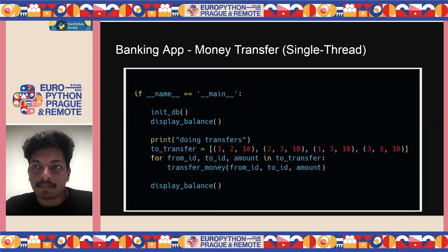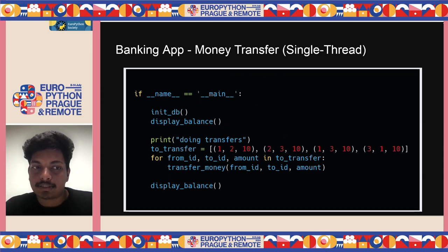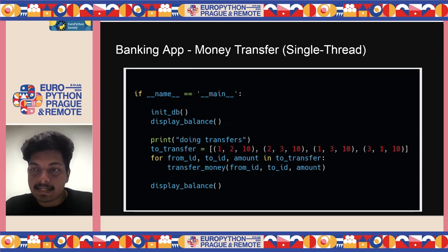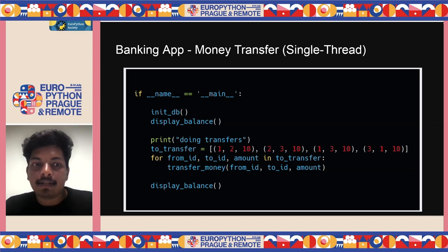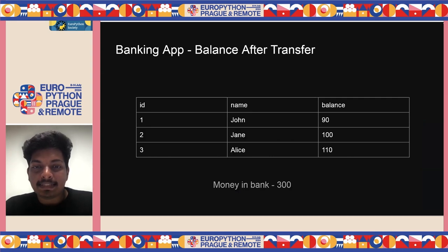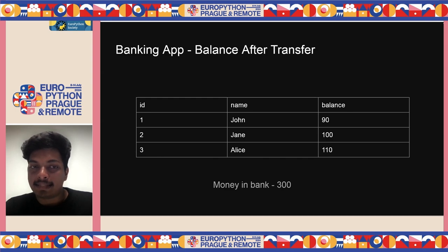This operation is completely sequential — no threads — so it should work cleanly. We initialize the DB, display the balance, then perform transfers defined as a list of tuples with from_id, to_id, and amount. We transfer $10 from John to Jane, Jane to Alice, John to Alice again, and Alice back to John. John ends up with $90, Jane $100, and Alice $110 — simple math. The total is still $300 and it works perfectly in sequential order.